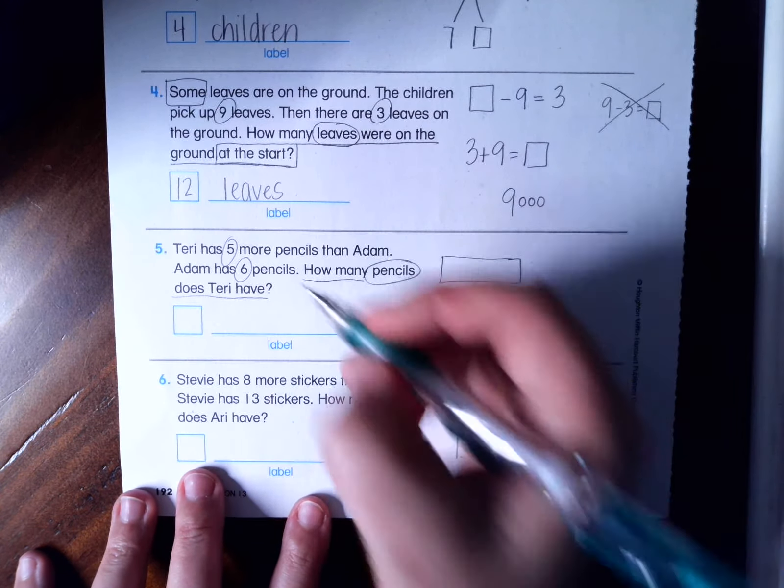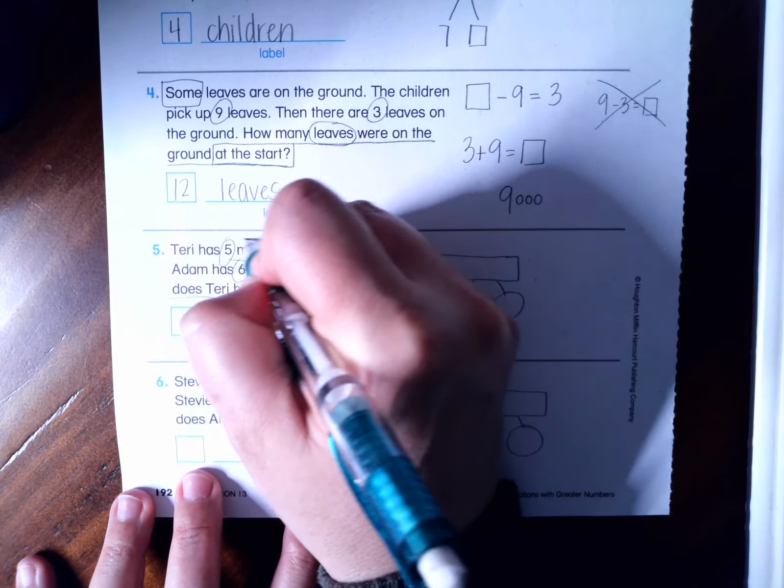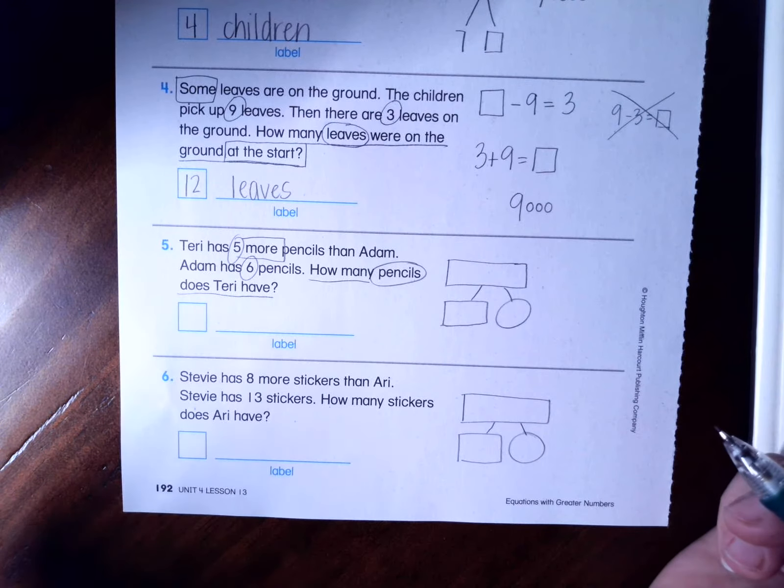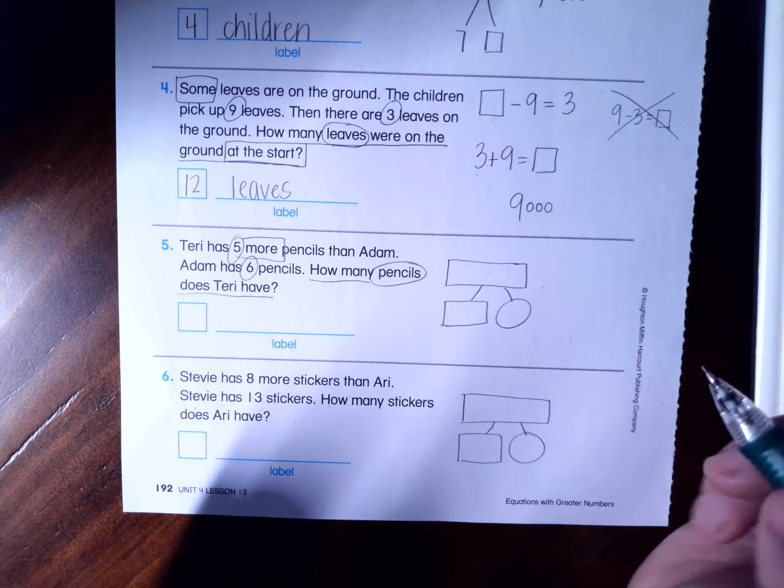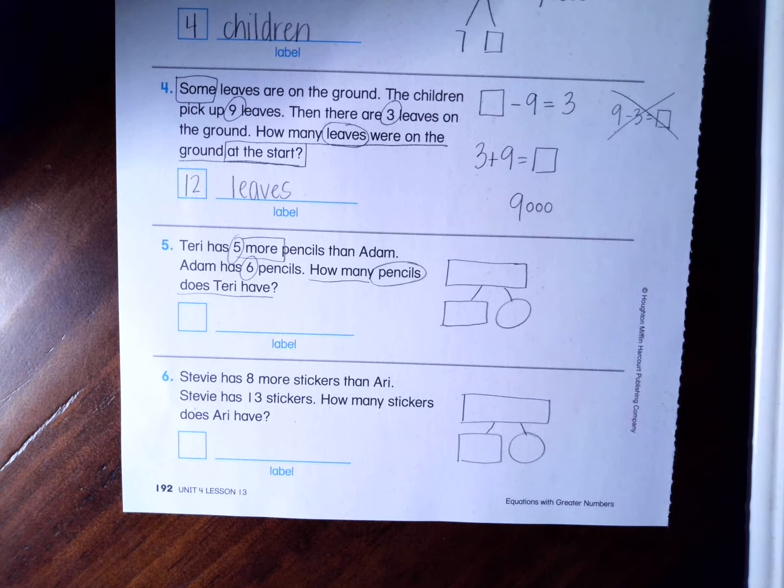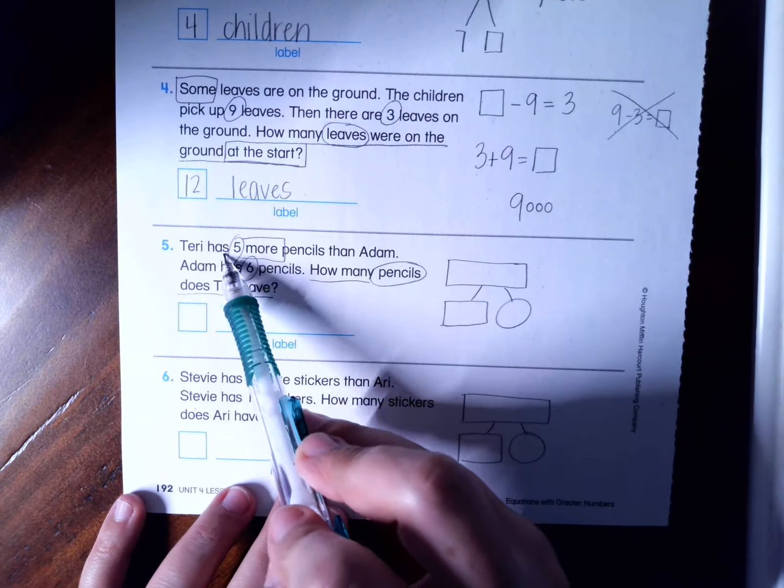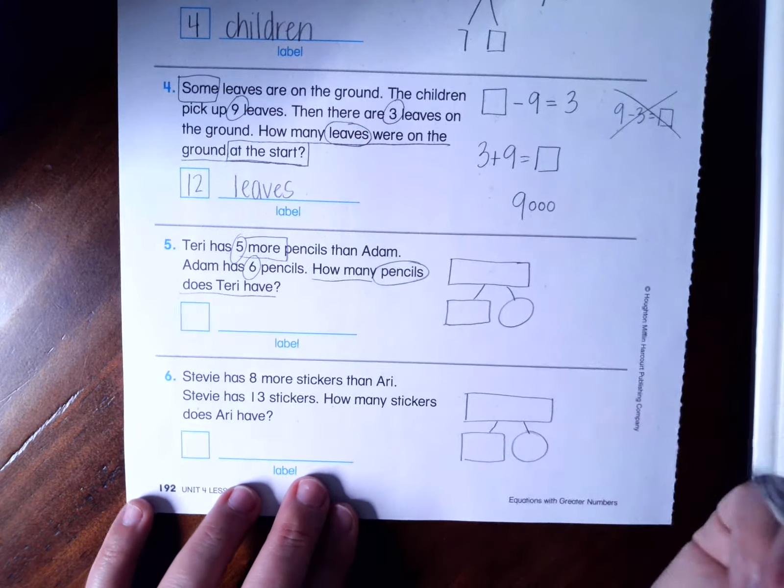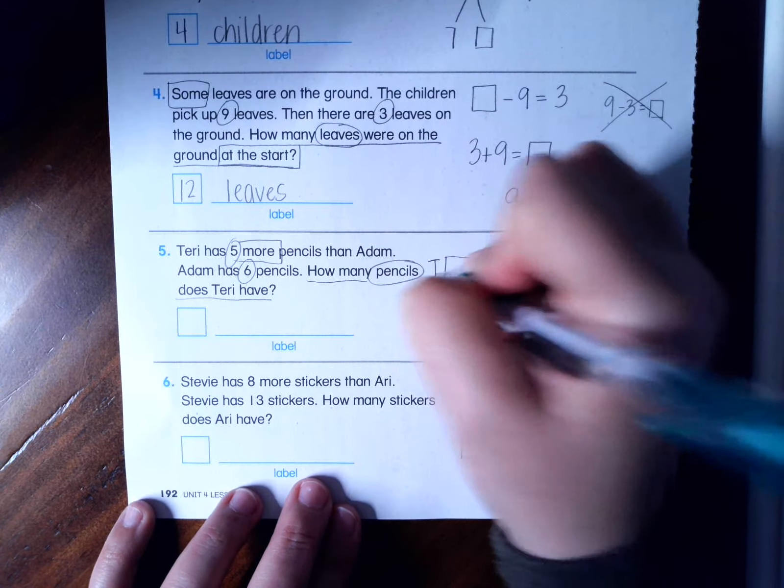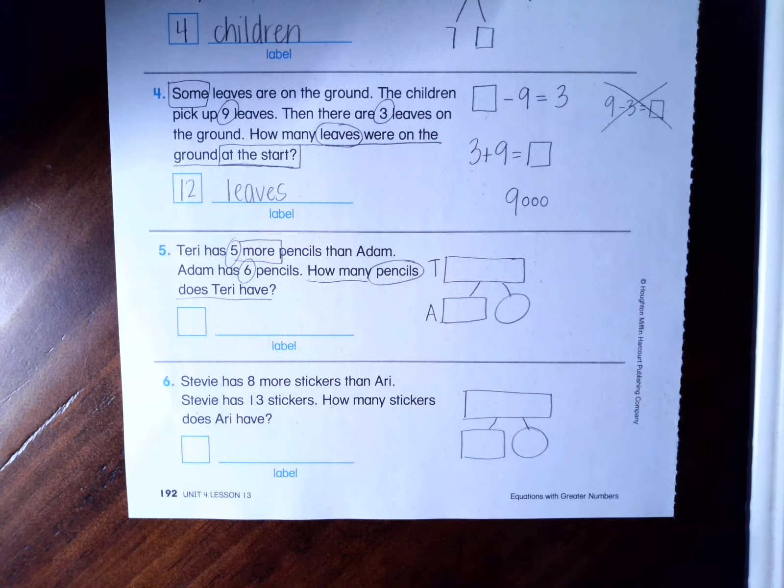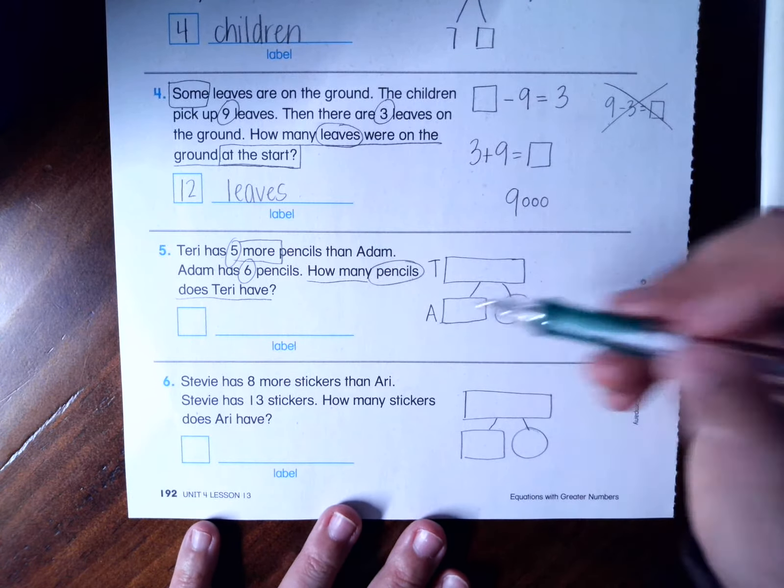I'm going to box up my clue words. I have the word more and that's pretty much it. So remember with comparison bars, you have to figure out which name goes on top and which name goes on bottom. So I need to find out who has more. So it says, Tori has five more. That tells me that T goes on top. A goes on bottom. Tori, Adam.